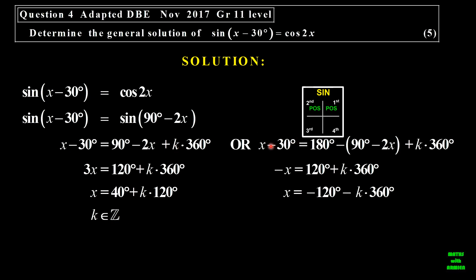For the other one, we have to find the second quadrant. So the angle on the left side is x minus 30 equal to 180 minus (90 minus 2x). Be careful with removing the brackets, so that becomes a plus 2x transposed, it becomes a negative x. And 180 minus 90 is 90. 90 plus 30 is 120. Divide everything with a negative. And therefore there we have the general solution: x equal to 40 plus k times 120, or x is equal to negative 120 minus k times 360, where k is an element of the integers.